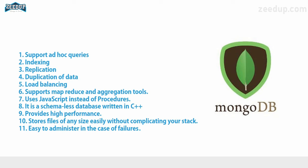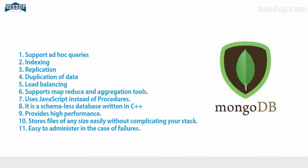MongoDB also has an automatic load balancing configuration. This is achieved because the data is placed in shards. Since there is no definitive structure in MongoDB's data organization, the concept of load balancing ensures that whatever data we are working with is balanced in chunks and organized in a well-defined manner.